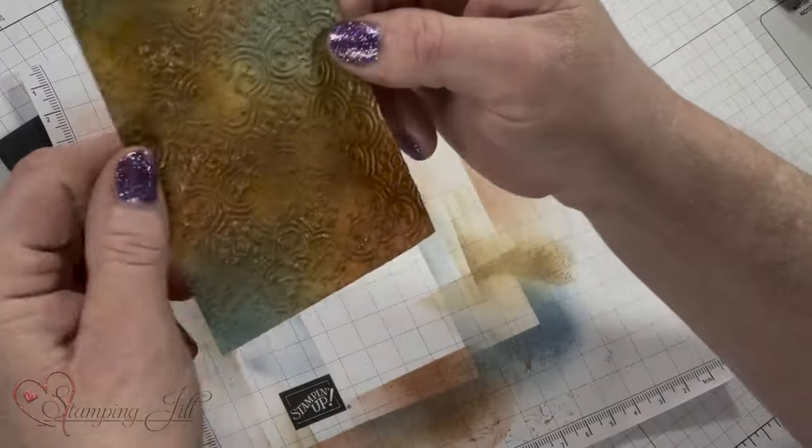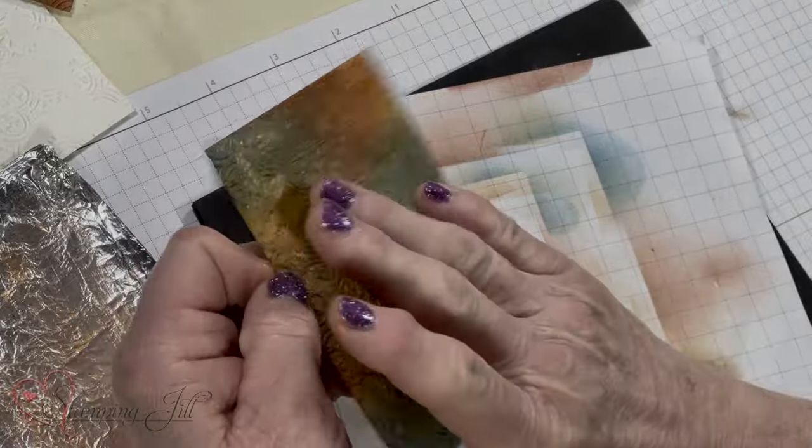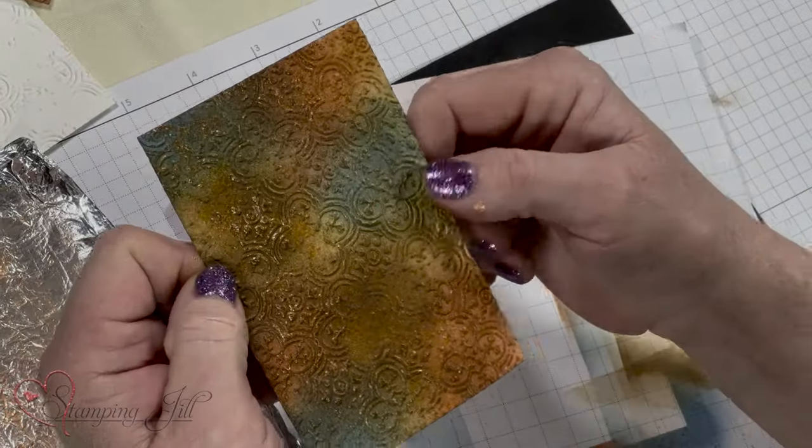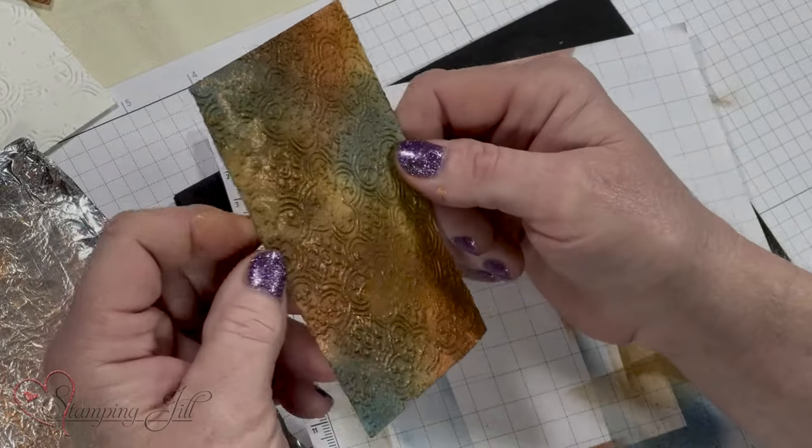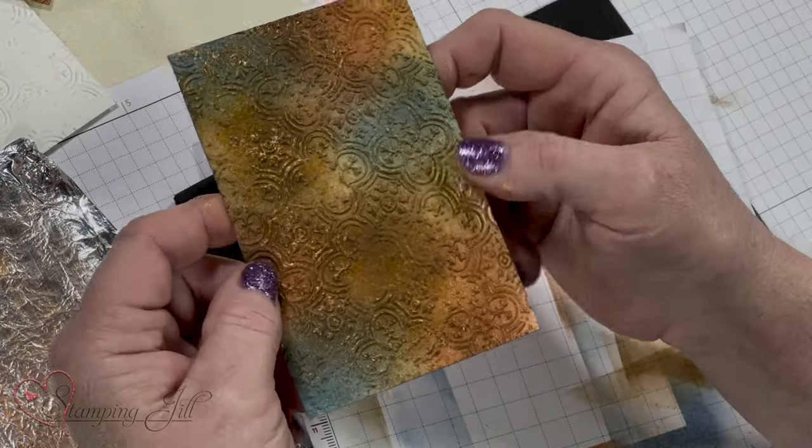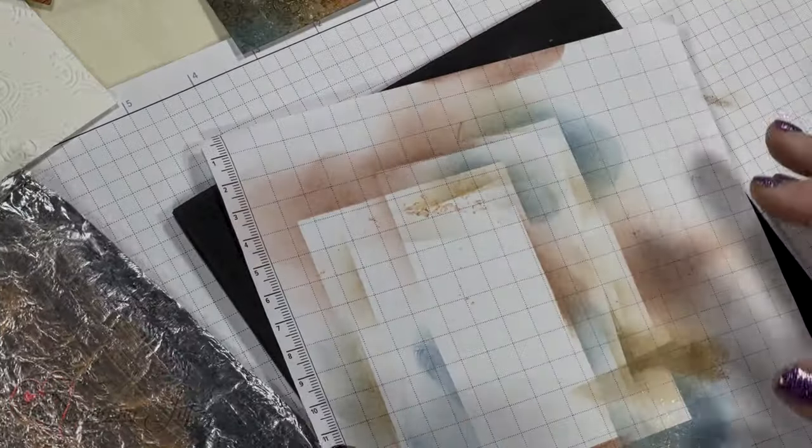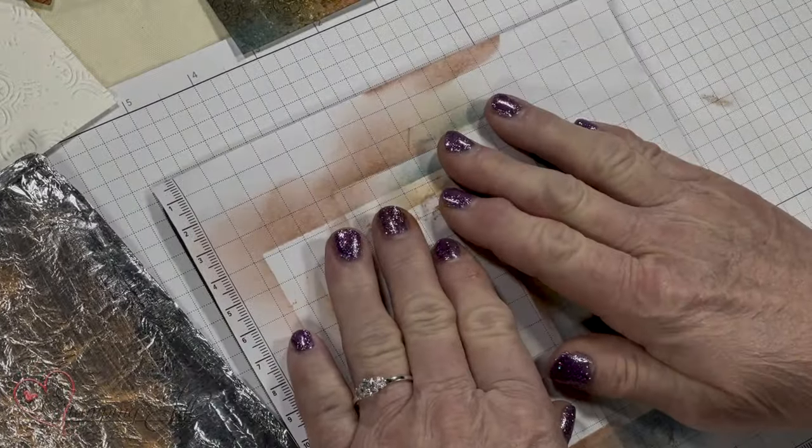So the nice thing about this, it's easy to do. It dries amazingly fast. This is pretty much dry already. So that's as easy as it is to put that on there. No embossing, no embossing powder, and no kind of wondering where it's going to go. You apply it to where you want it to be.